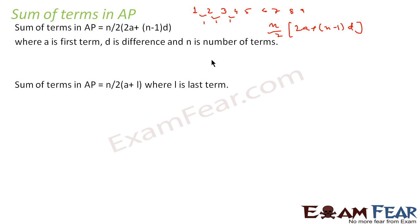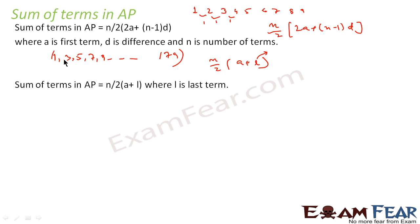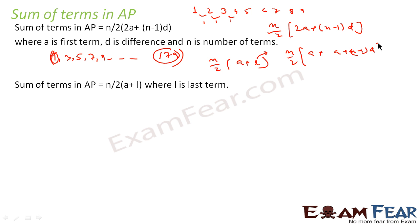The sum of terms in AP can also be written as N/2 × (A + L), where L is the last term. For example, for the sequence 1, 3, 5, 7, 9 ... up to 179, you know A (the first term) and L (the last term). This formula is equivalent because N/2 × (2A + (N−1)D) can be rewritten as N/2 × (A + (A + (N−1)D)), and A + (N−1)D is nothing but the Nth term, giving N/2 × (A + L).